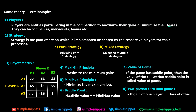Next we have strategies. A strategy is the plan of action chosen by a player for their processes. For example, two car manufacturing companies each have multiple strategies to increase sales or reduce losses. Depending on whether a player selects only one strategy or multiple strategies, it is categorized as pure strategy or mixed strategy. We'll solve one numerical on each type.